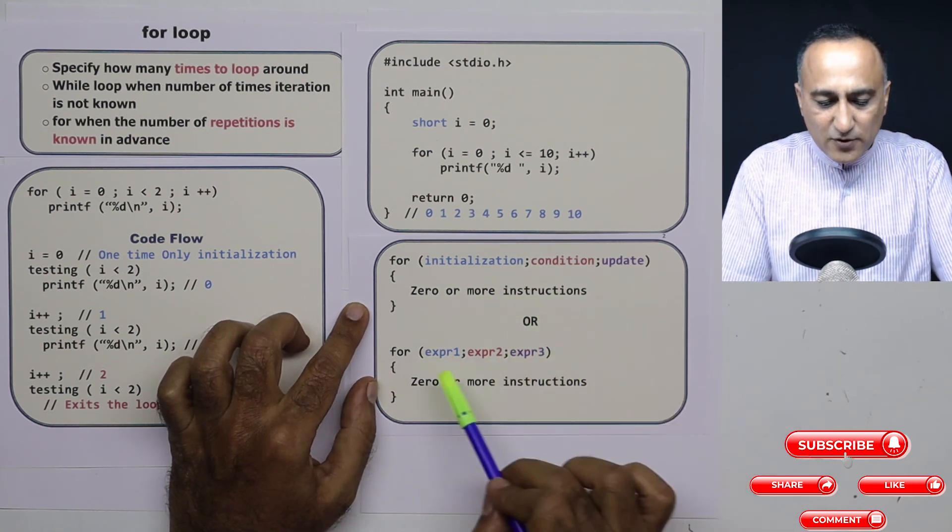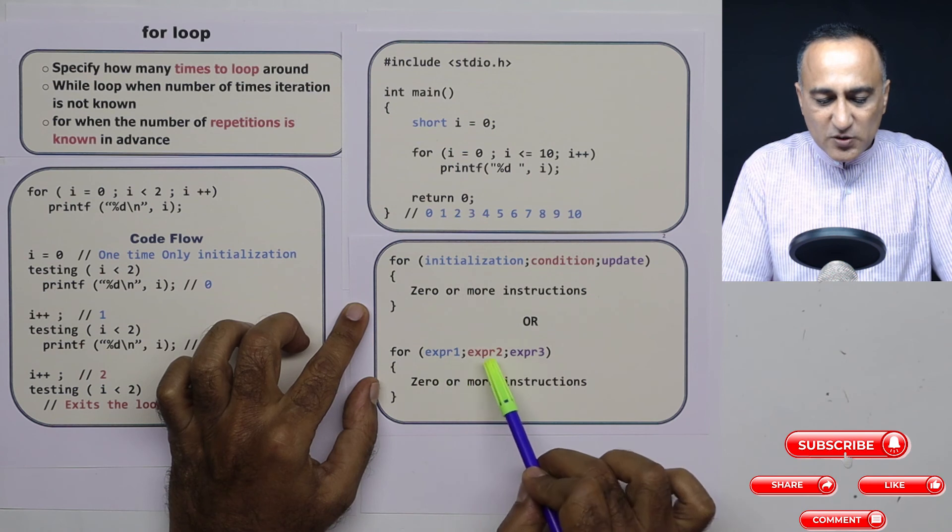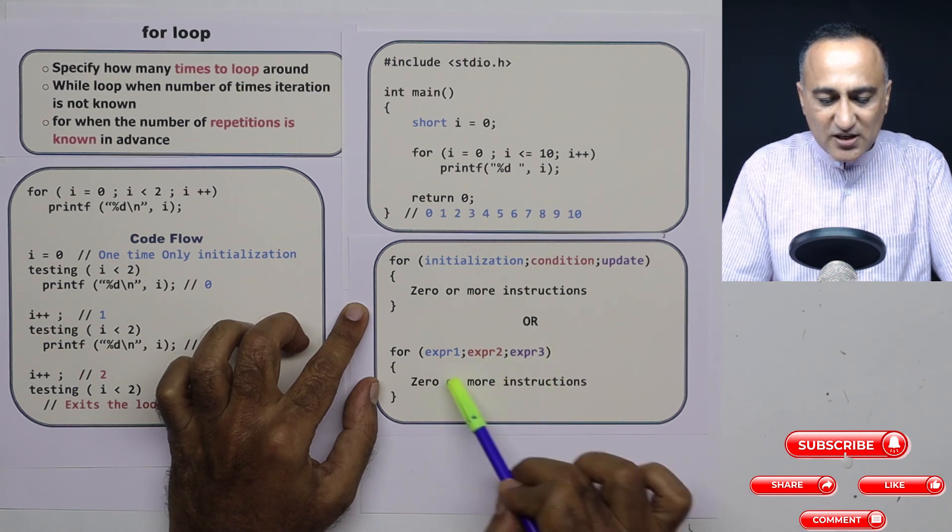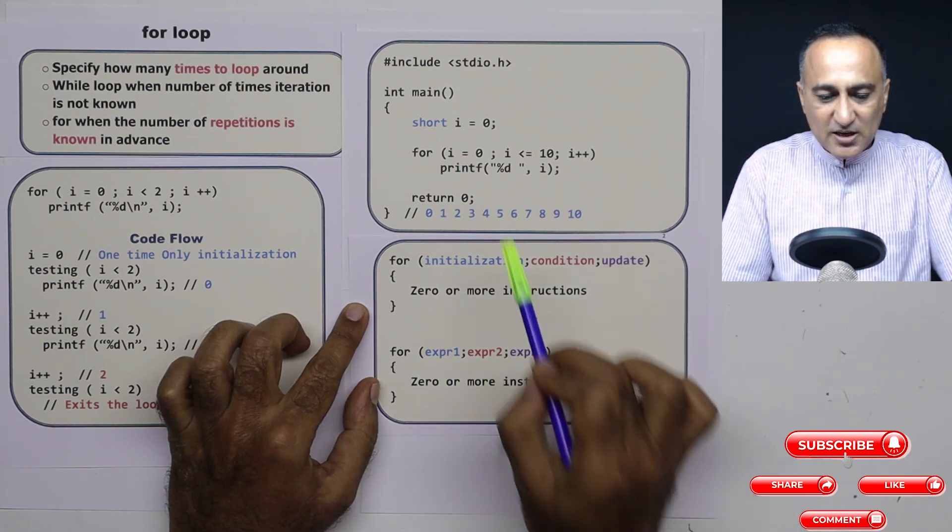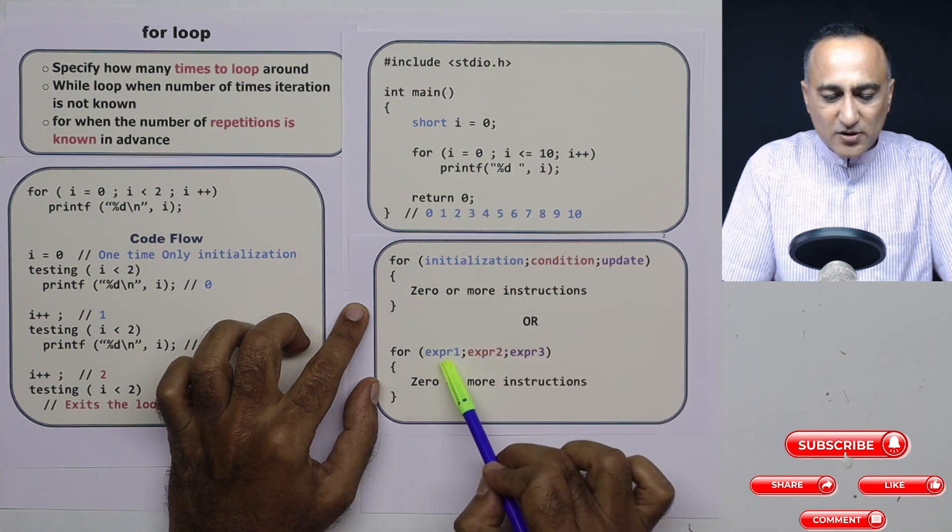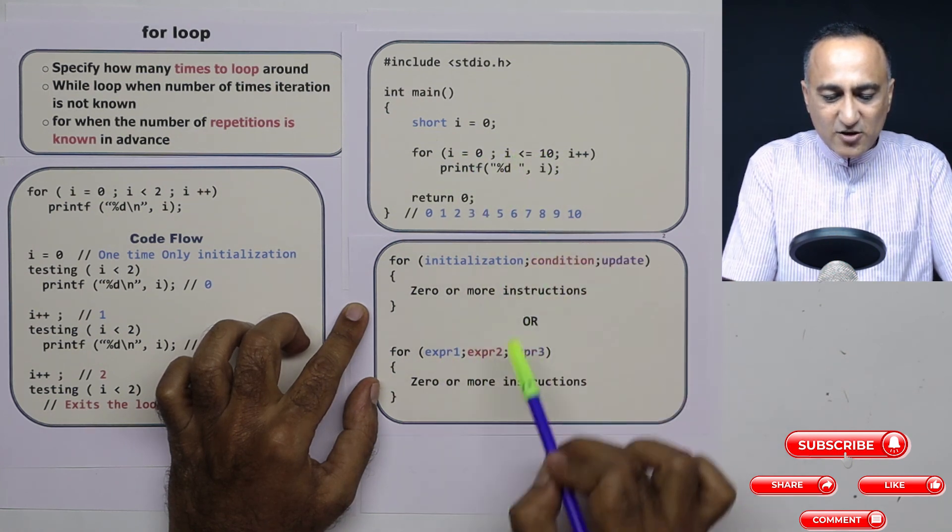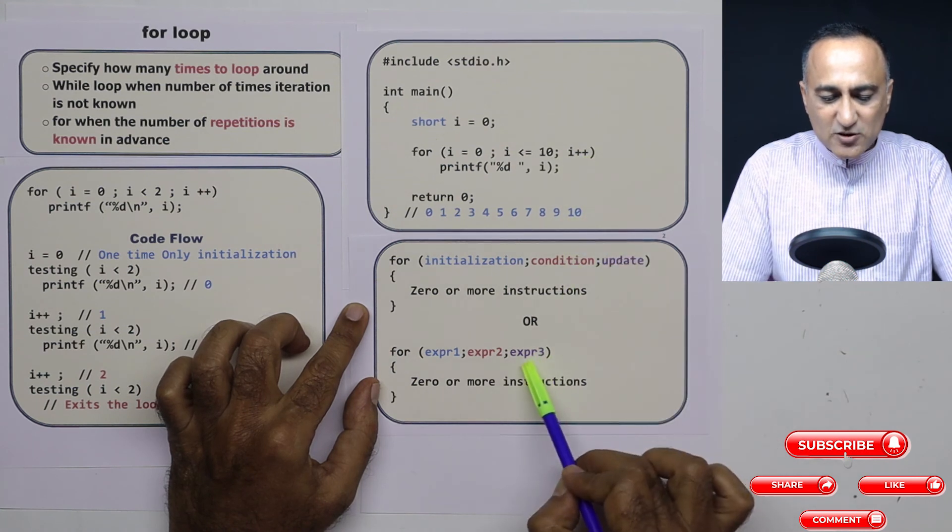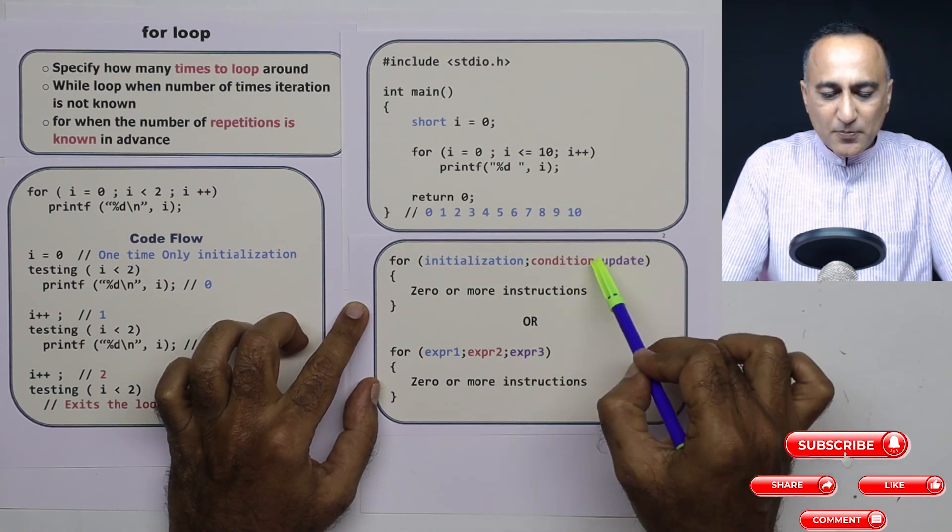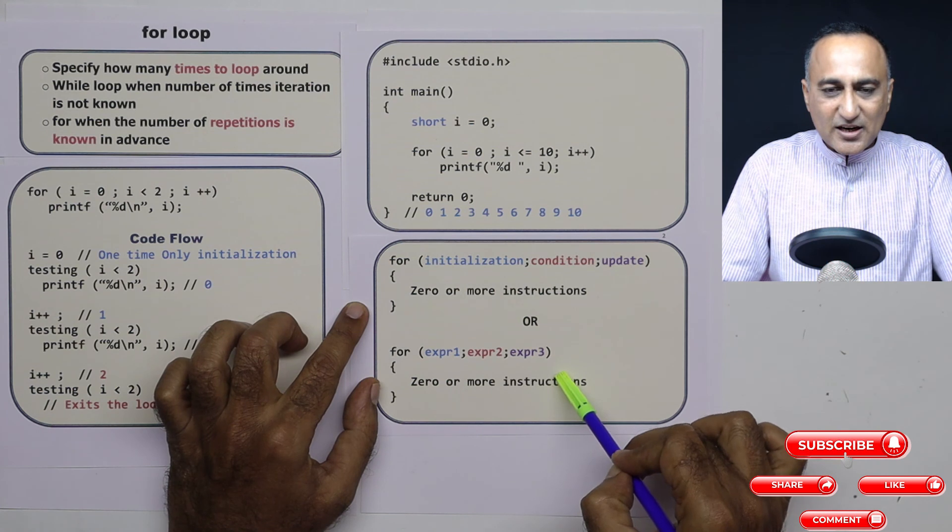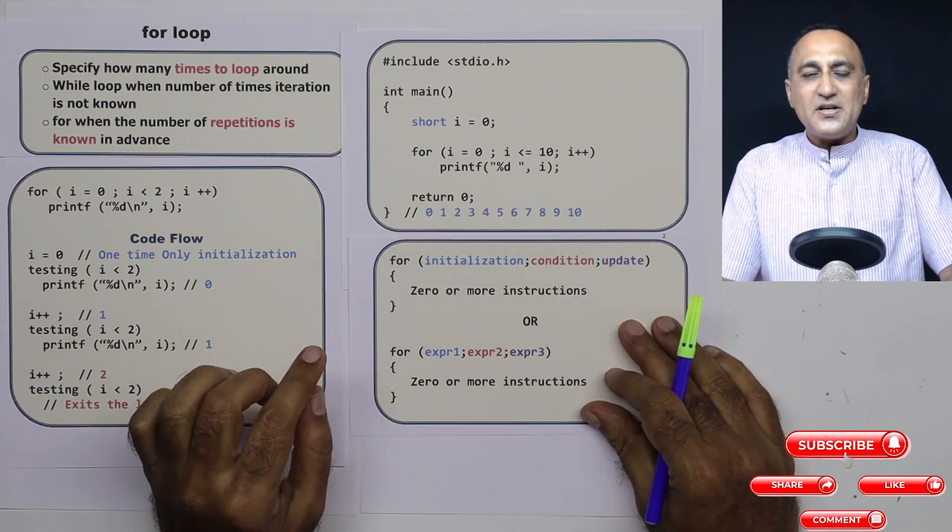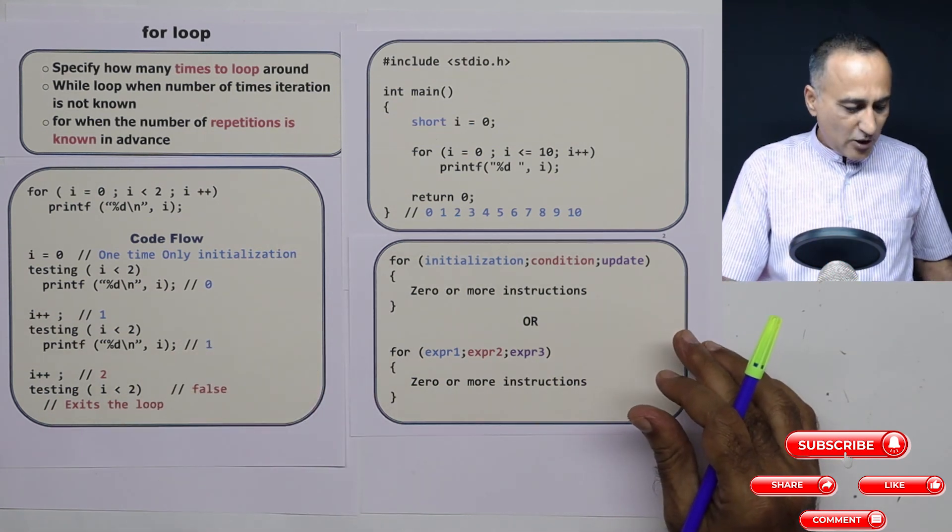The other alternate syntax for a for loop is for expression one, expression two, expression three, again, zero or more statements. Because if you see i equals zero is also an expression, i less than or equal to ten is also an expression, i plus plus is also an expression. So you may prefer to use this or this to describe the syntax of a for loop.